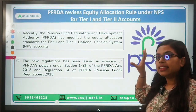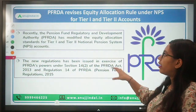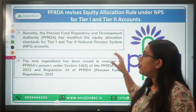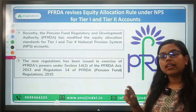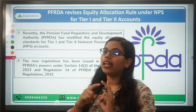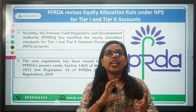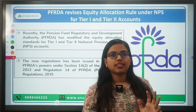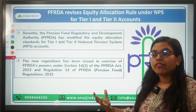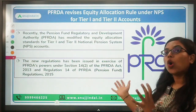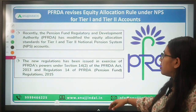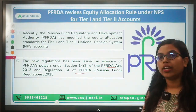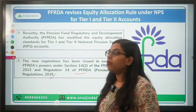Recently, PFRDA has modified the equity allocation standards for Tier 1 and Tier 2 National Pension System accounts. Under NPS there are two types of accounts — Tier 1 and Tier 2 — and changes have been brought in the amount of investment to be done in the equity segment. PFRDA has been authorized to do this under the PFRDA Act of 2013 and Regulation 14 of PFRDA Regulations 2015, as amended from time to time.